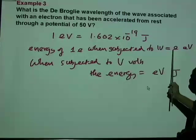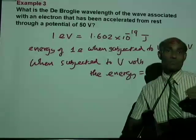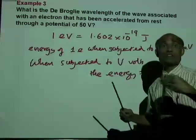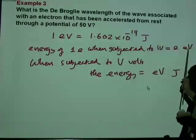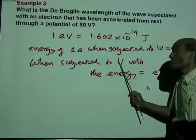Now, that is E electron volt. When 1 electron is subjected to a potential difference of 1 volt, the energy it acquires is E electron volt. Therefore, if an electron is subjected to V volts, the potential difference of V volts,